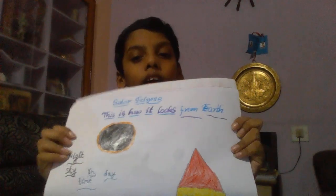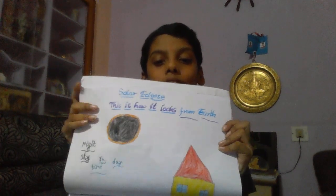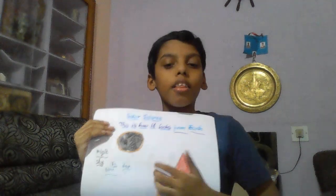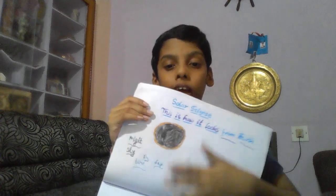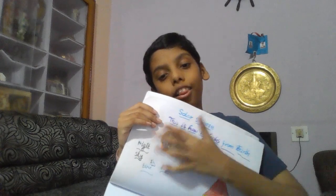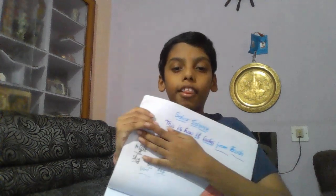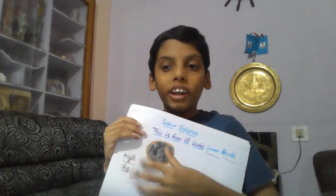So here is the solar eclipse — this is called an annular solar eclipse. Here is the earth, and from earth it will look like this: the moon will come in front of the sun and block the sun's light. Got it?